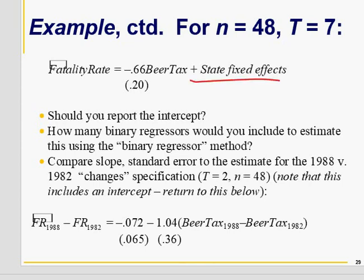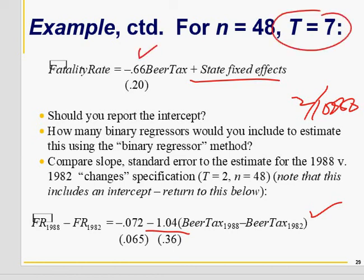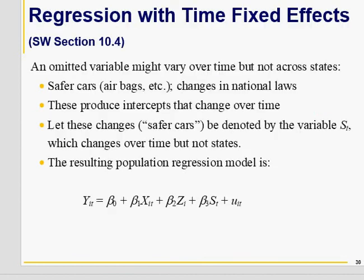We are not interested in state-specific effects. When you have two time periods, the coefficient is minus 1.04, meaning increasing beer tax by $1 per case reduces the death rate by 1 per 10,000, which is quite high because total deaths are about 2 per 10,000 in our data. This model uses data for seven time periods, whereas the earlier result used only two time periods, so there is a difference in data.